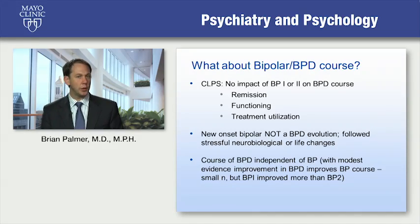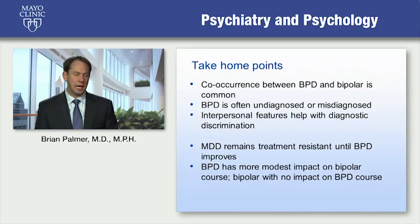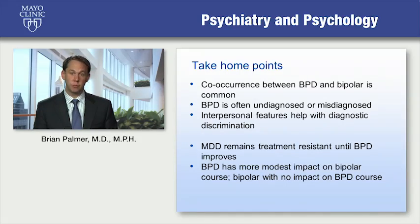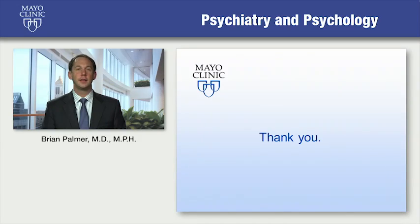The take-home points from this discussion: co-occurrence between borderline and bipolar is common; borderline is often undiagnosed and misdiagnosed; and the interpersonal features — the context — really help distinguish and discriminate diagnostically between the two disorders. Major depression tends to remain treatment-resistant until borderline improves, borderline has a much more modest impact on bipolar course, and bipolar has no impact on borderline course. Thank you for the opportunity to present this material — I hope it's been helpful.